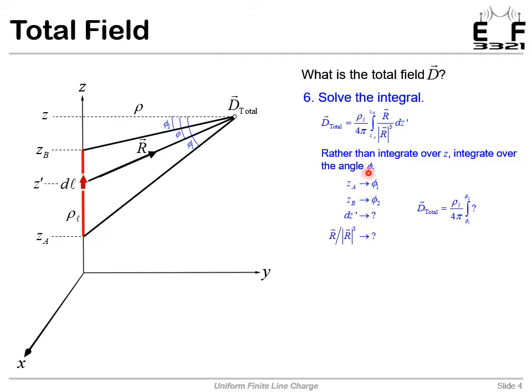So our ZA becomes phi1. Our ZB becomes phi2. But the real questions are then what does DZ prime become? What does this vector ratio become? And then when we plug it all into the integral, what does that become? So we need to put everything here in terms of this angle phi instead of Z.